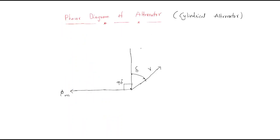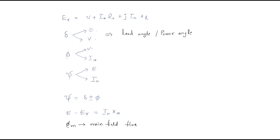In an alternator, the armature current always lags. Assume this is the current vector ia. The angle between the terminal voltage and the load current — or armature current — is called the power factor angle, phi.